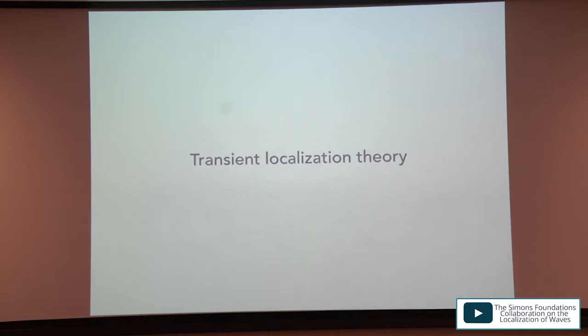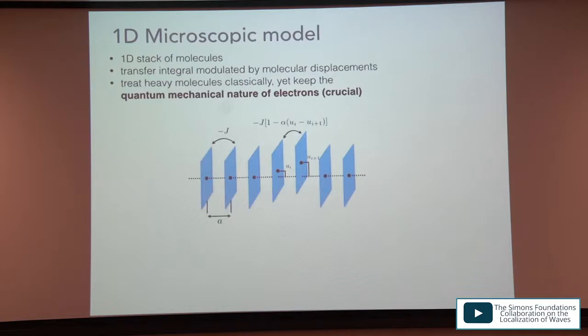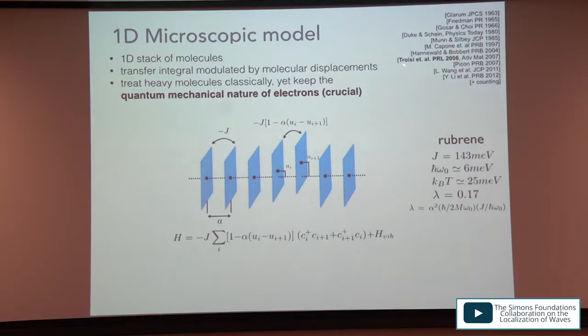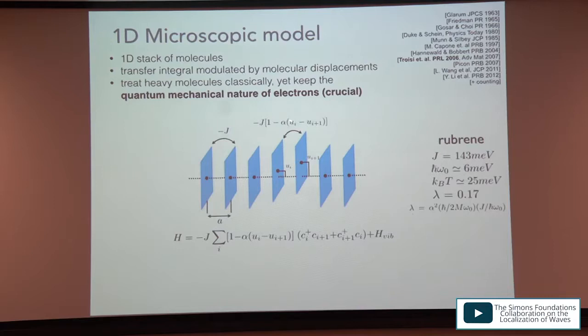Rather than using standard electron-phonon coupling, it is better to change perspective and view the fluctuating transfer integrals as slowly varying Gaussian disorder. The theory — transient localization theory — started in 2006 when Troisi decided to study this model numerically. The model is a stack of molecules allowed to fluctuate, with transfer integrals modulated linearly in the molecular coordinate u, giving Gaussian fluctuations.